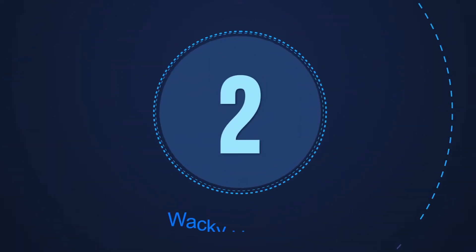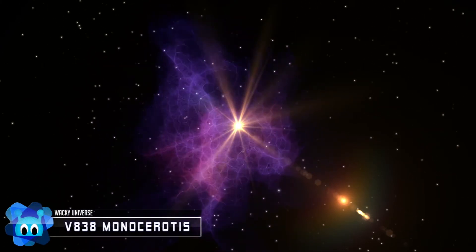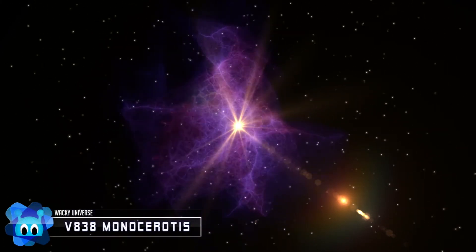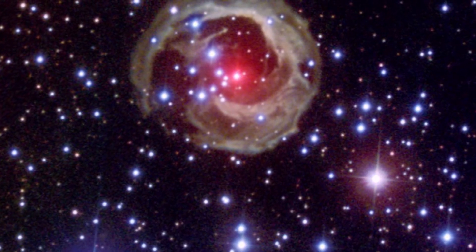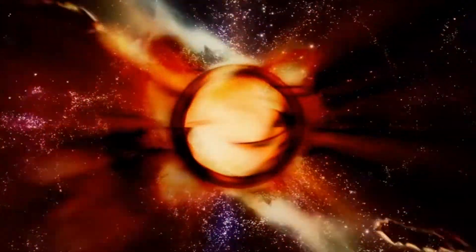Number 2: V-838 Monocerotis. In 2002, a star on the outer edge of the Milky Way, V-838 Monocerotis, suddenly brightened in the night sky and revealed the great plumes of dust swirling around it. Over the course of three months, this star flared up three separate times to become one of the brightest objects in the galaxy.